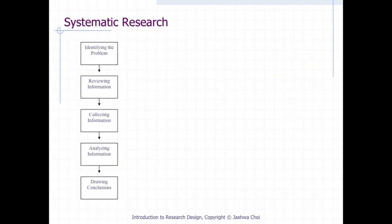This is an example of a systematic process. The first step is identifying the problem, and then we review the information, then collect the information or data, then analyze the information. The final stage is we draw a conclusion.